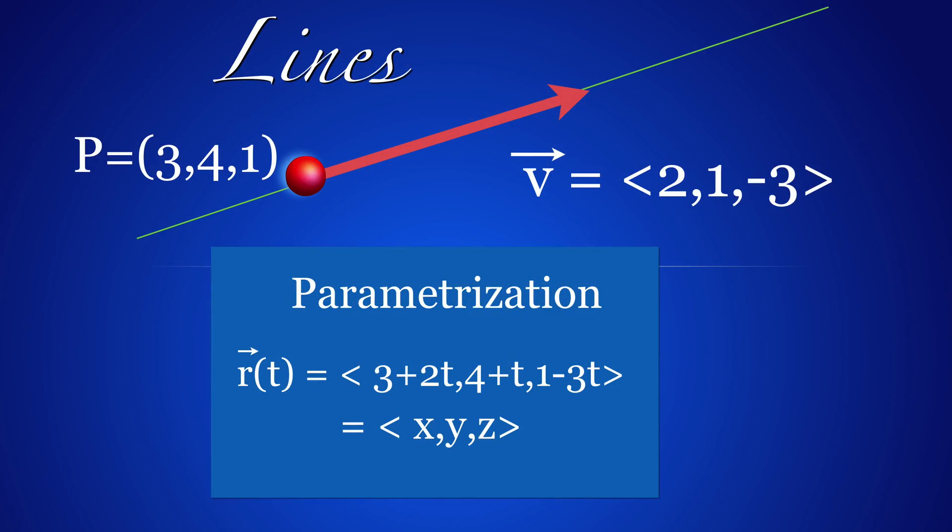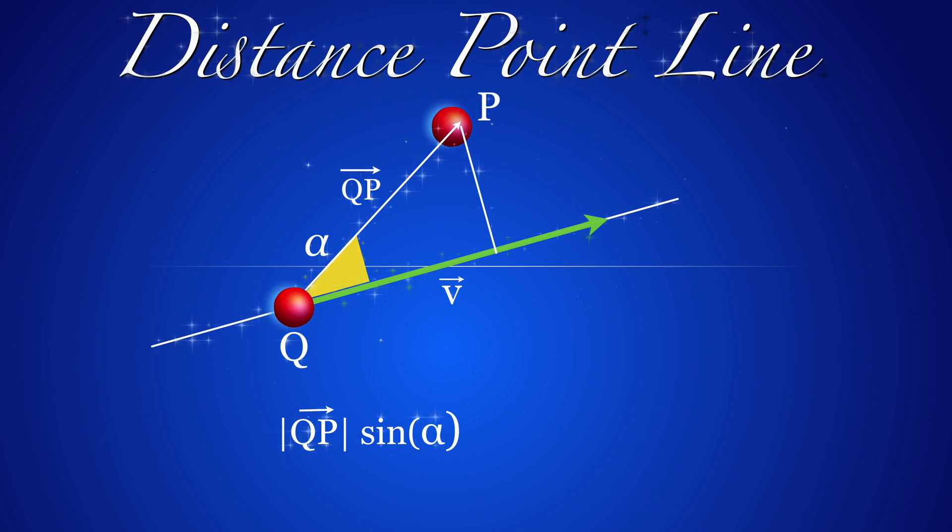A line can be parameterized if we know a point and a vector in the line. The distance between a point and a line can be read off using trigonometry. It's the length of QP times the sine of the angle between V and QP.